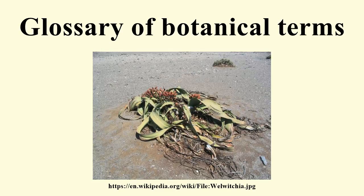Binomial nomenclature: the system of nomenclature in which the scientific name of a species is a combination of two names, the first name being the generic name. The second name is referred to botanically as the specific epithet. Note that the two names together constitute the species name, not just the second word. Bipinnate: twice pinnate, for example of a compound leaf with individual leaflets pinnately divided. Bipennatisecta: a pinnatisecta leaf with deeply dissected segments. Bisexual: bearing both male and female reproductive organs, usually flowers with both stamens and carpels. Compare hermaphrodite, monoecious, monocarpous.